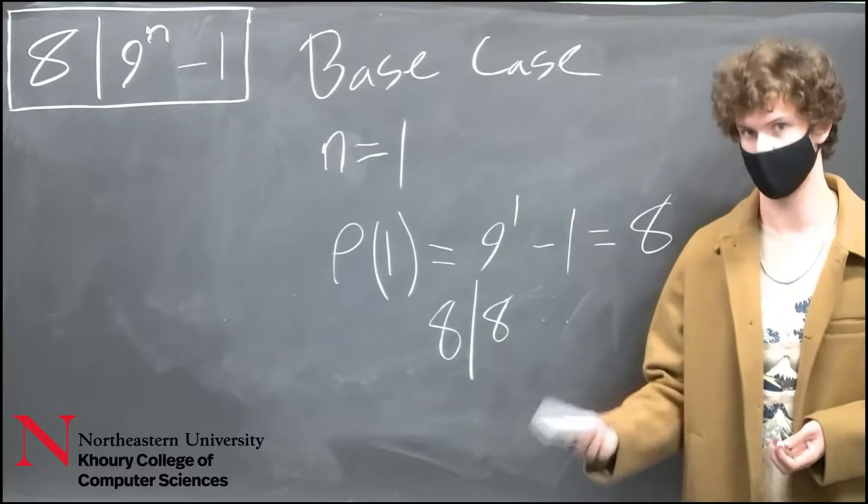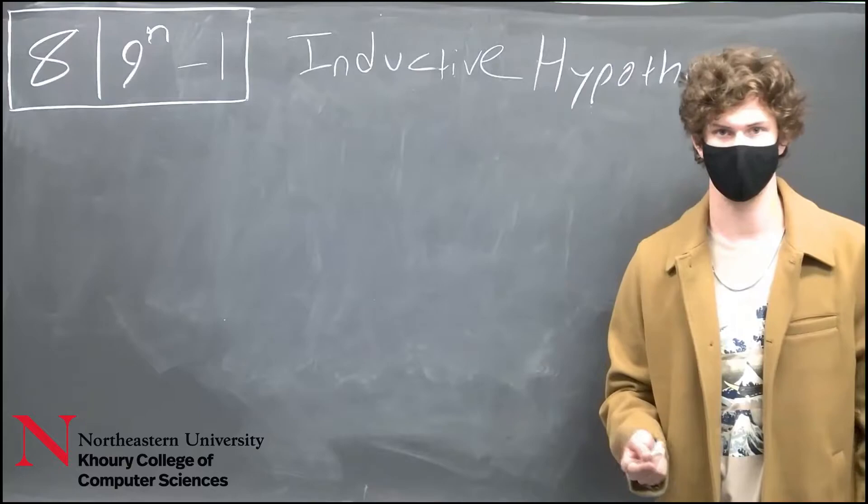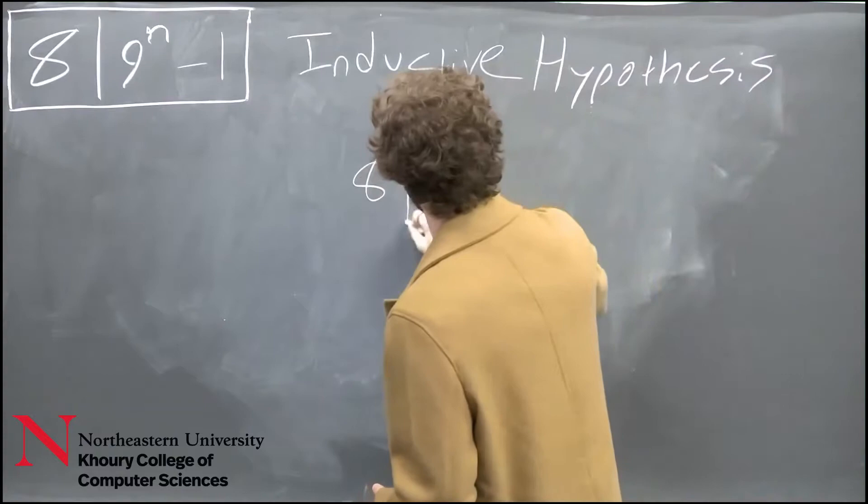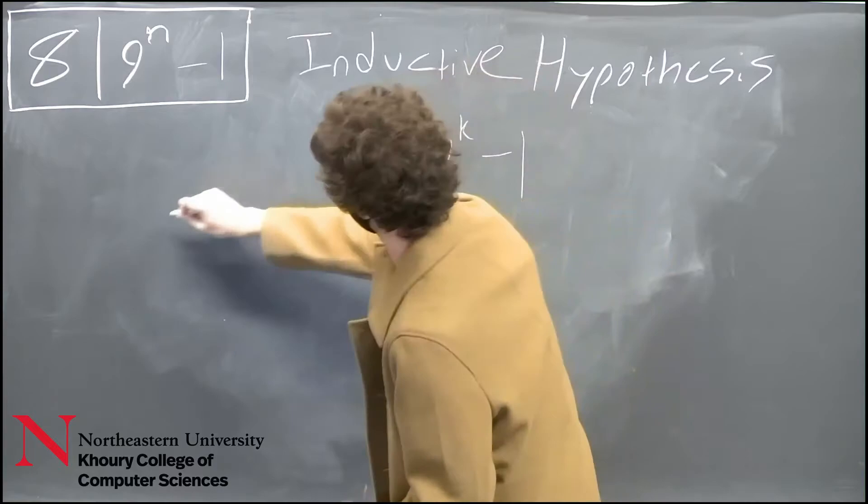We assume this to be true for further purposes of proof. For our inductive hypothesis we set n equal to k, and this claims that 8 divides 9 to the k minus 1, and this is for n equals k.